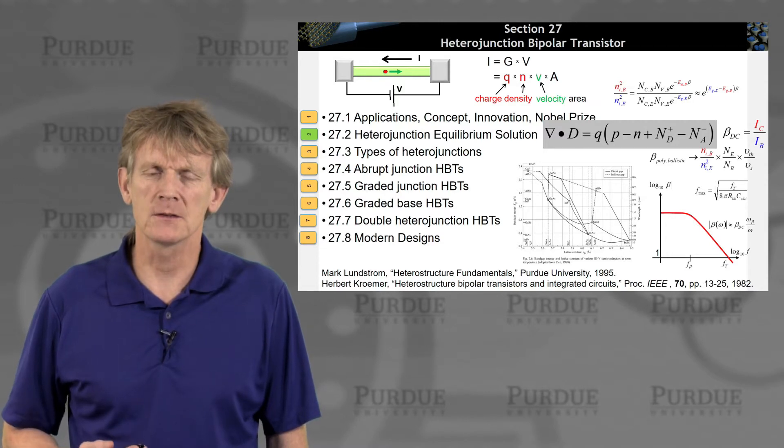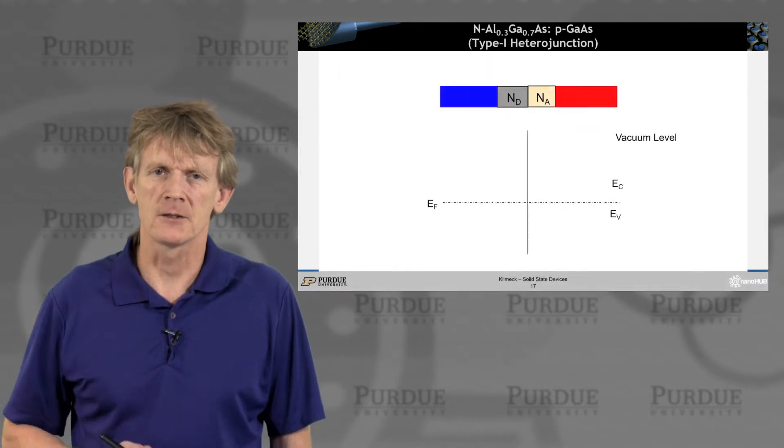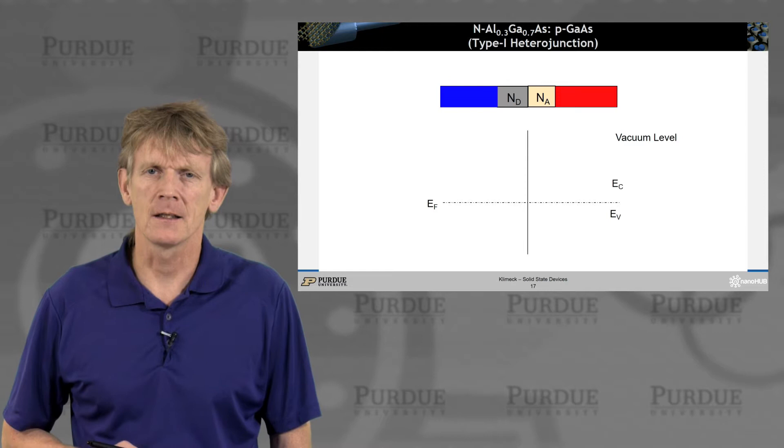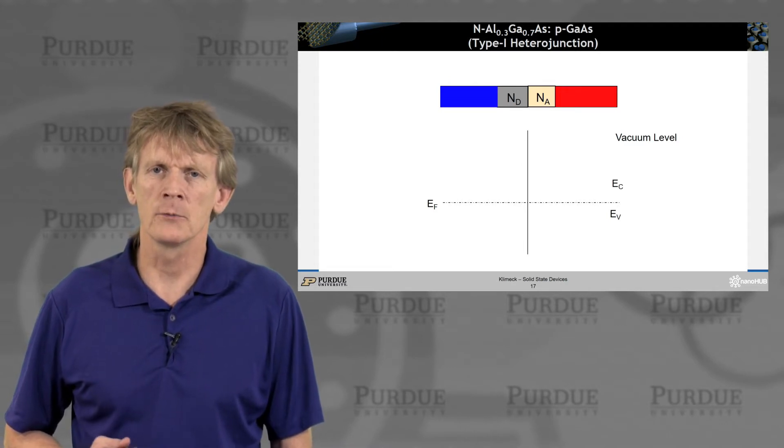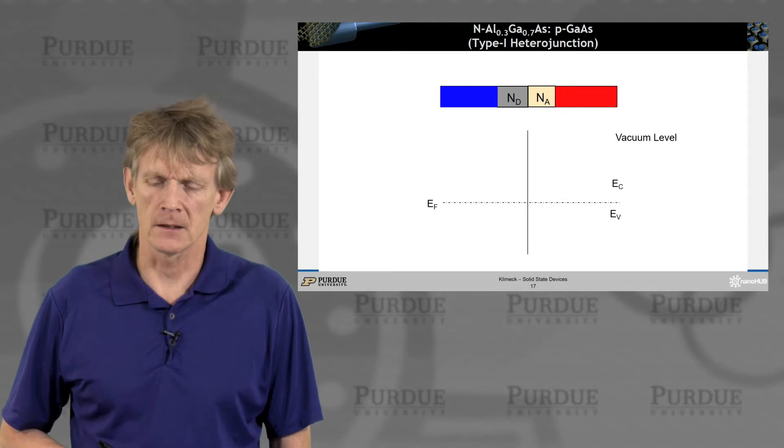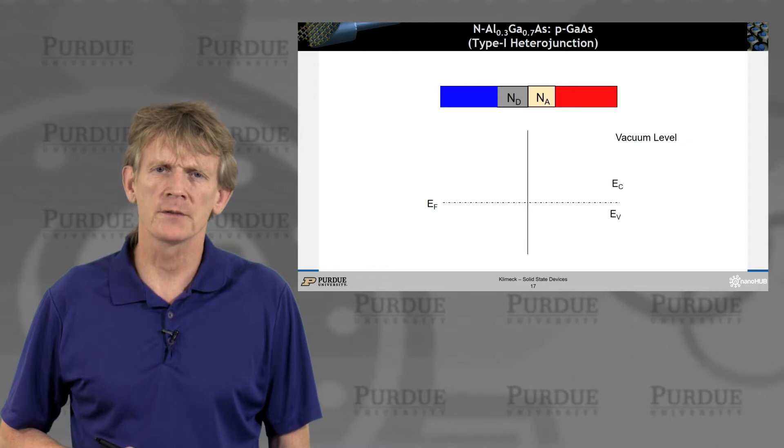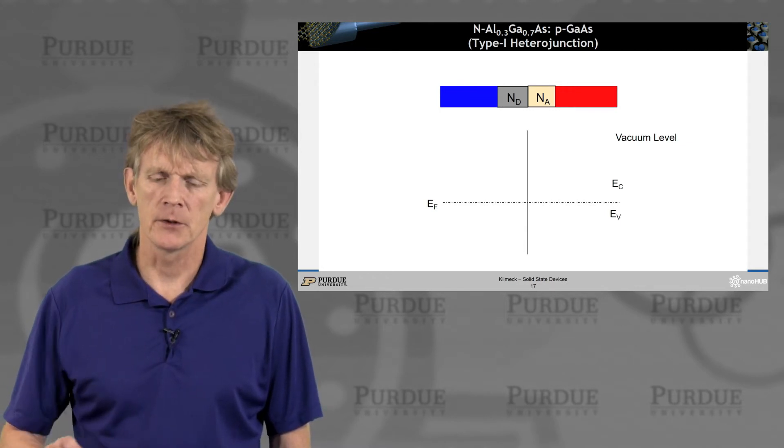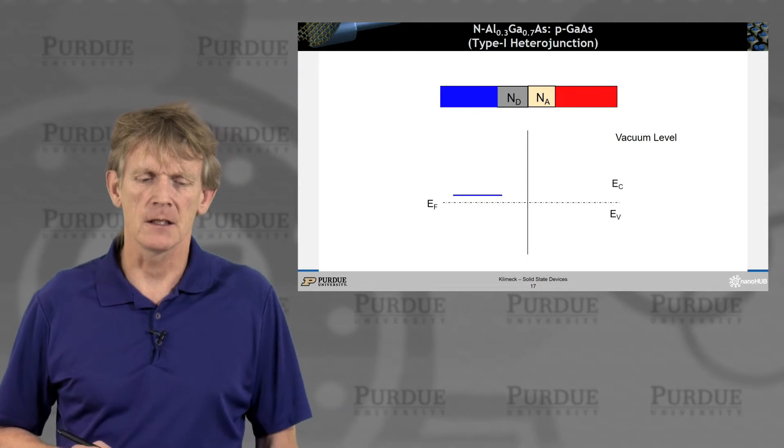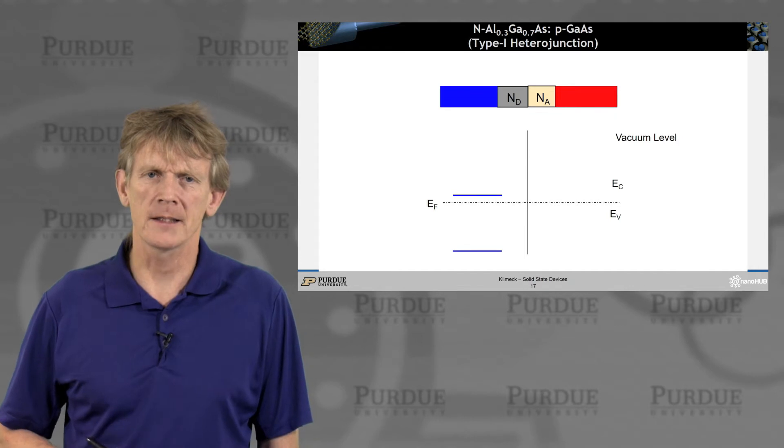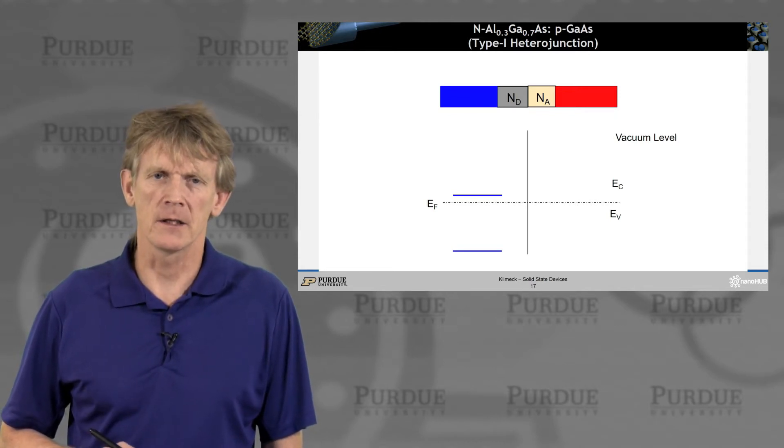And we'll step through it similarly to what we had done with other junctions before. So here we had a PN junction before. Now we're going to look at an NP junction, but out of aluminum gallium arsenide and gallium arsenide. So we start out with a constant Fermi level that we draw across, and then we sketch out the AlGaAs N-doped band gap. So the conduction band is closer to the Fermi level on the left, and the valence band is way down. AlGaAs is a large barrier material.